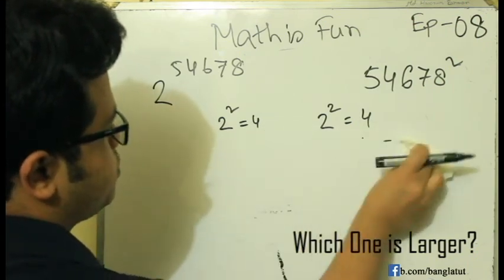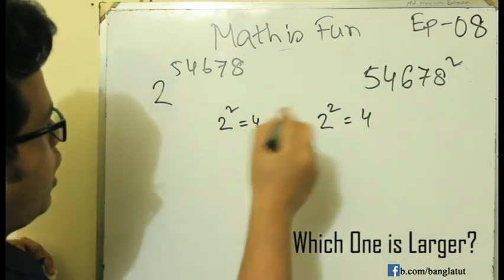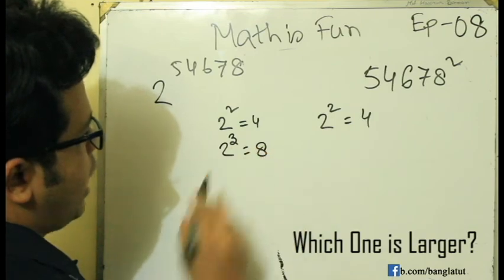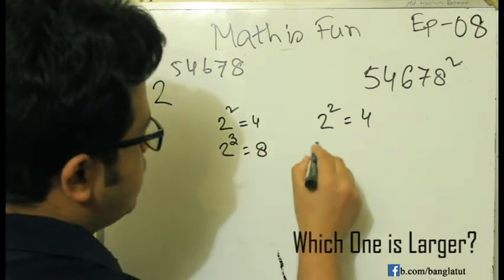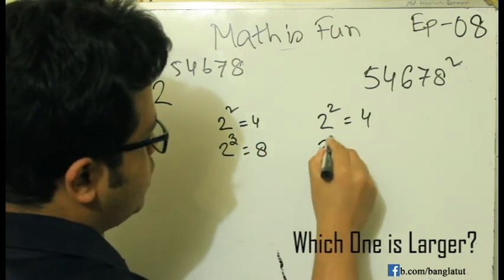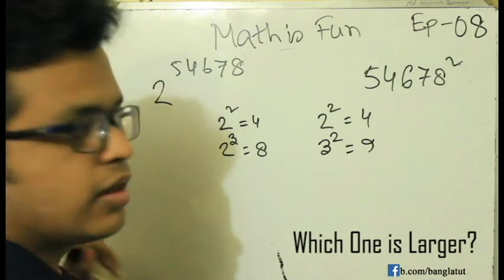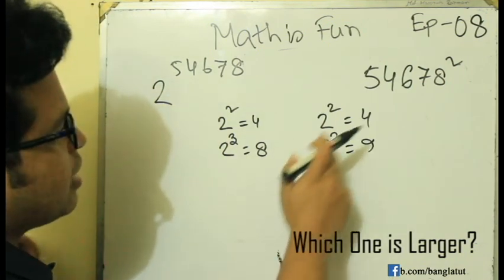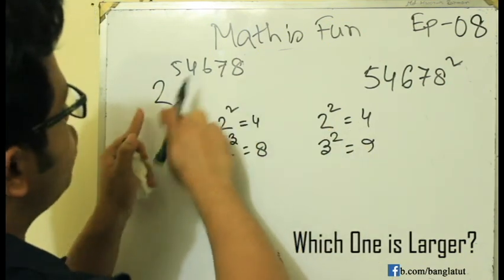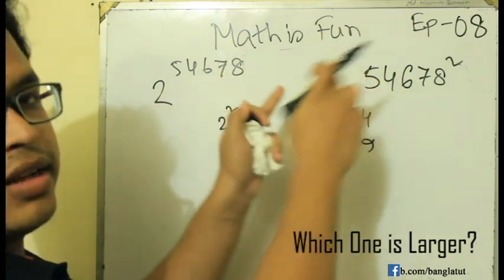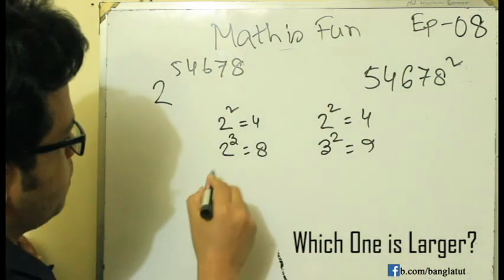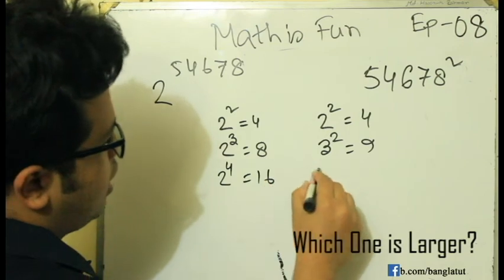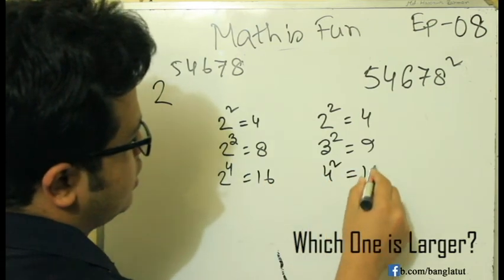The reason I did this is: 2 cubed is 8. 3 squared is 9. Now, if we consider the power of power is 4, then 4 squared is 16.